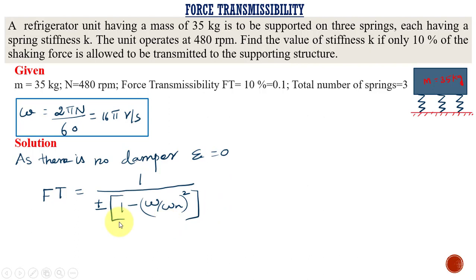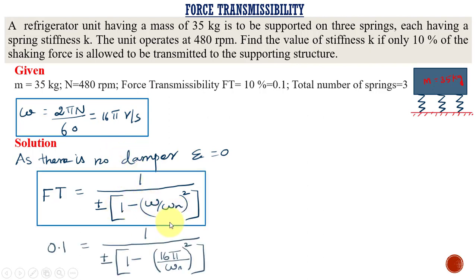We are going to substitute these values because force transmissibility is given as 0.1 and the omega value is calculated as 16π radian per second. We substitute these two values into the equation. Force transmissibility is 0.1 and omega is 16π — the only unknown is omega n. Now let us calculate that omega n value.